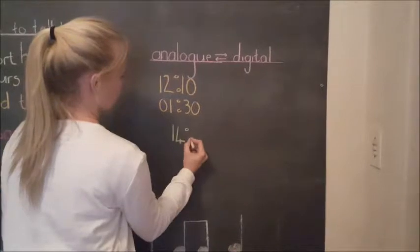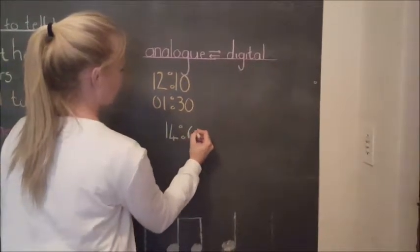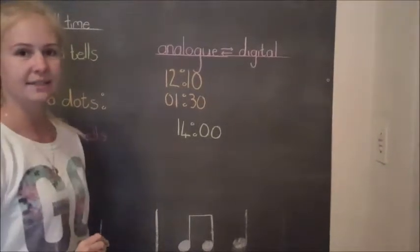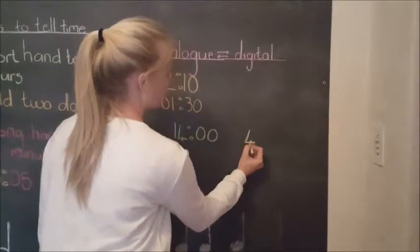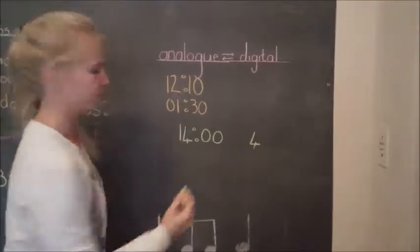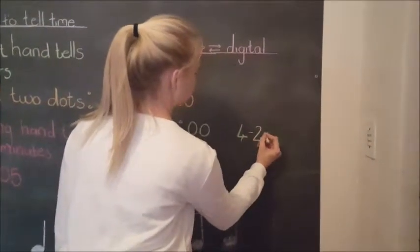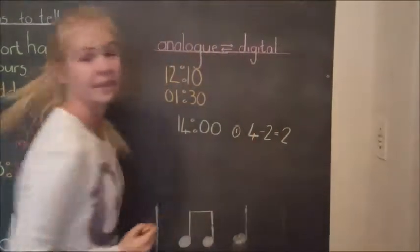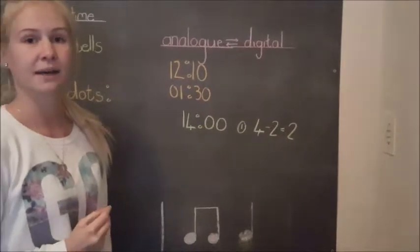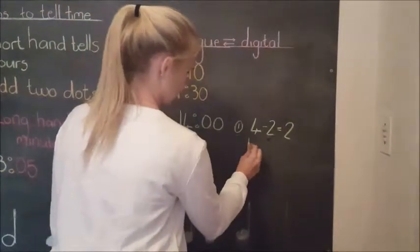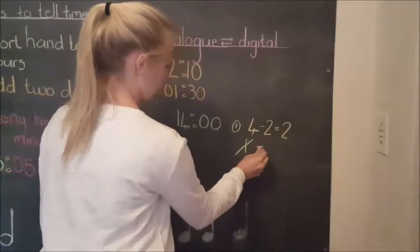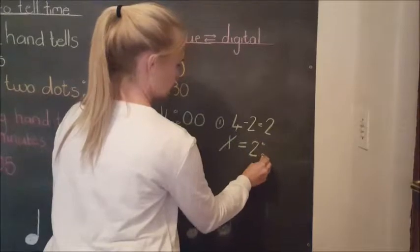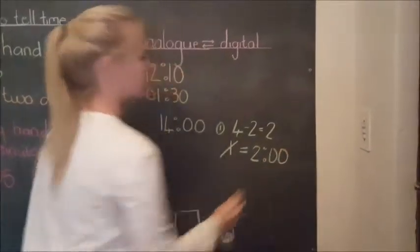Let's take 14:00. Step 1. Take the second number and minus 2. 4 minus 2 equals 2. The second step. Take the first number and minus 1. 1 minus 1 gives us zero. Therefore you are left with 2:00, which is two o'clock.